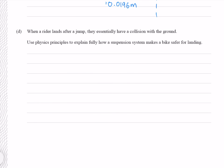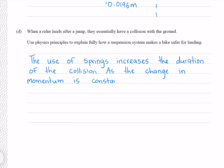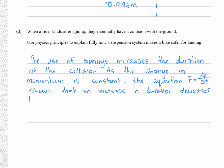When a rider lands after a jump, they essentially have a collision with the ground. Use physics principles to explain fully how a suspension system makes a bike safer for landing. The key idea is impulse: F = ΔP / Δt. The use of springs increases the duration of the collision. As the change in momentum is constant, an increase in duration decreases the force. A smaller force means a smaller risk of injury.